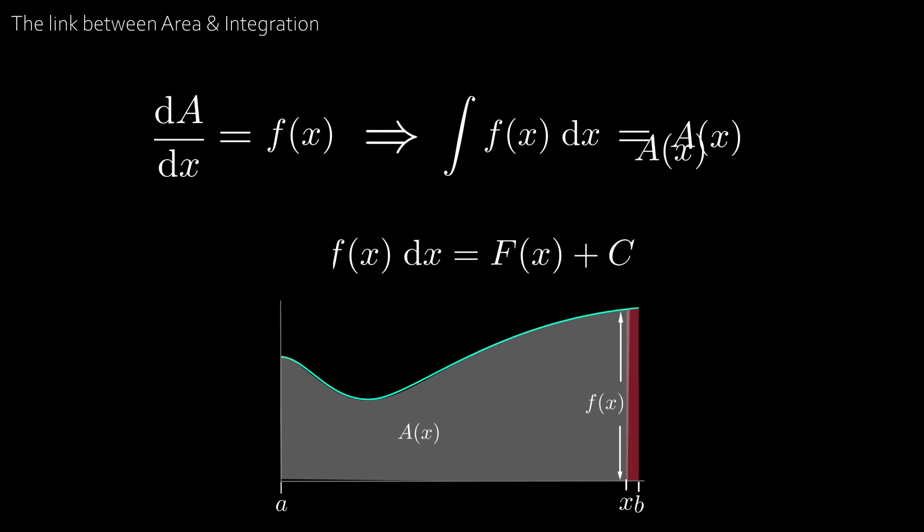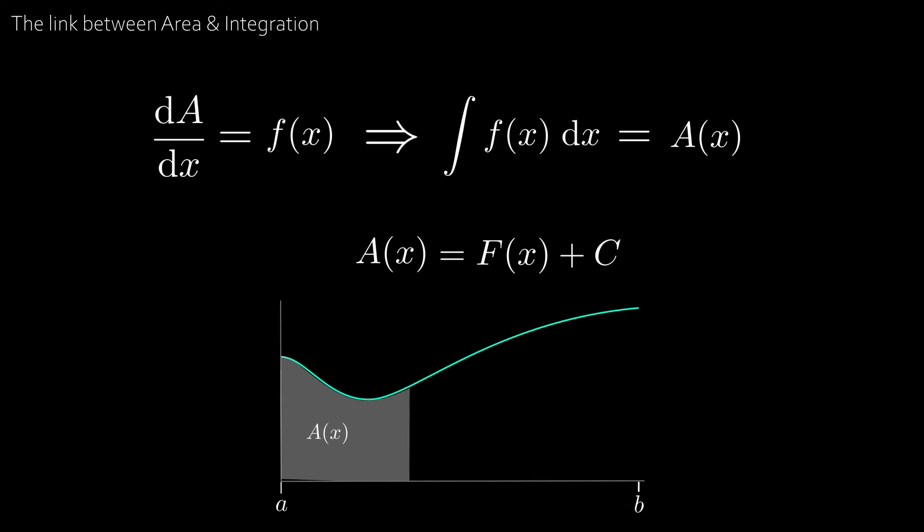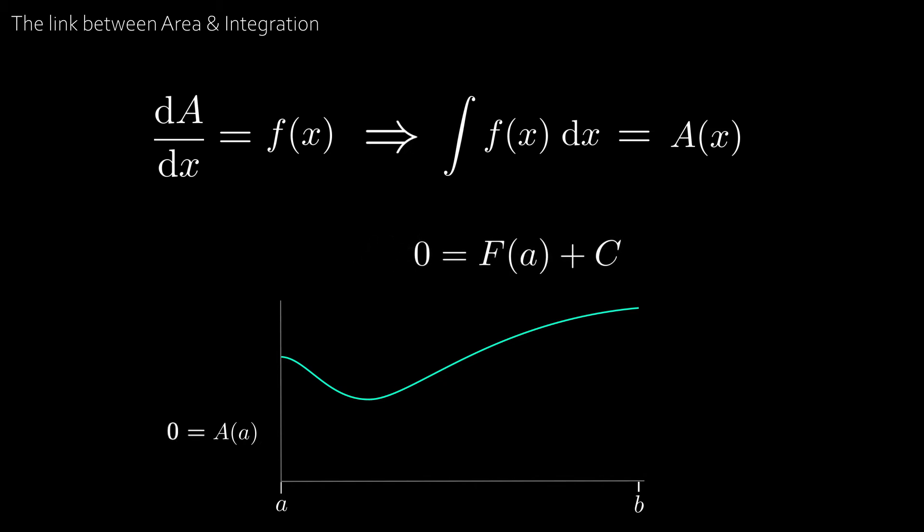And that means that A of x is equal to capital F of x plus c. Now we remember that in order to find c we need some sort of condition. And that condition is at x equals a. Then the area under the curve between a and a is zero. Which gives zero equals capital F of a plus c. Which gives c equal to minus capital F of a.